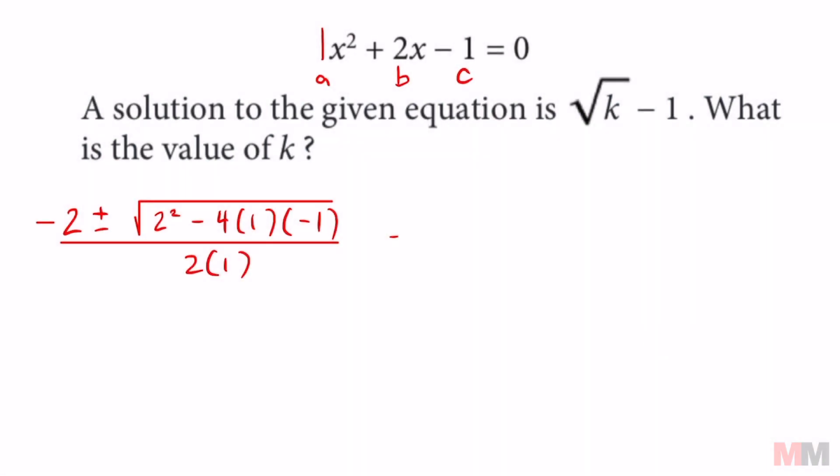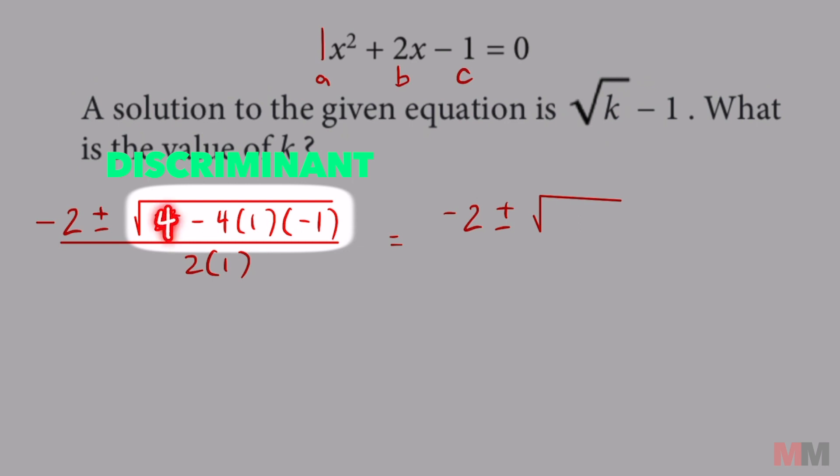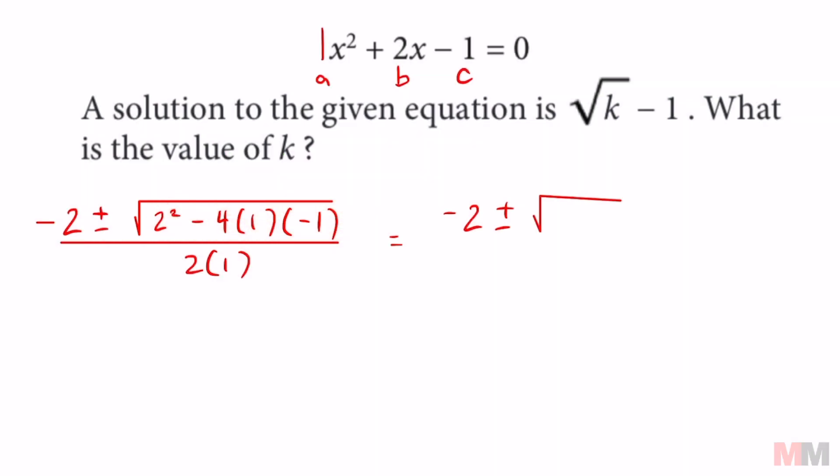You can simplify that further, and we'll get negative 2 plus or minus. They call the stuff inside the square root the discriminant. 2 squared is 4. All of these is going to be a positive 4, so 4 plus 4 is going to be 8, all over 2 times 1, which is going to be 2.